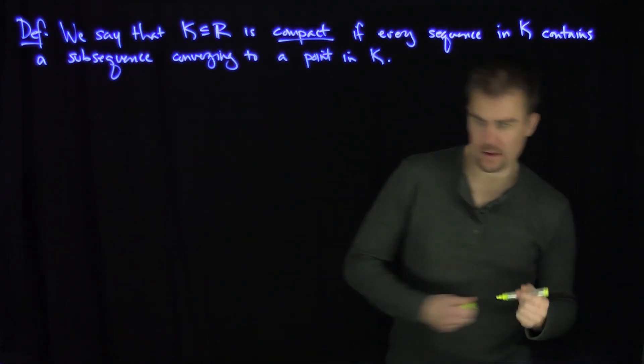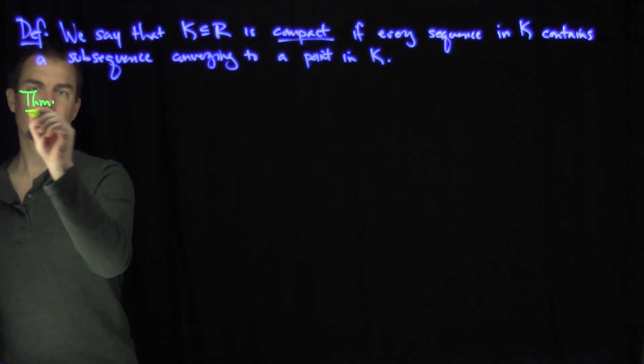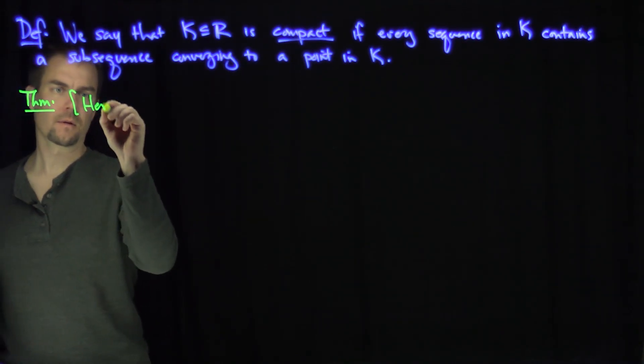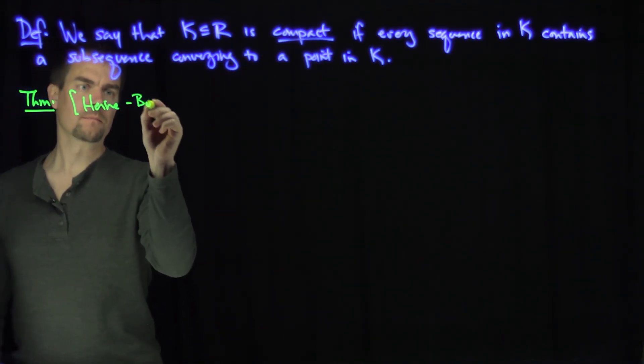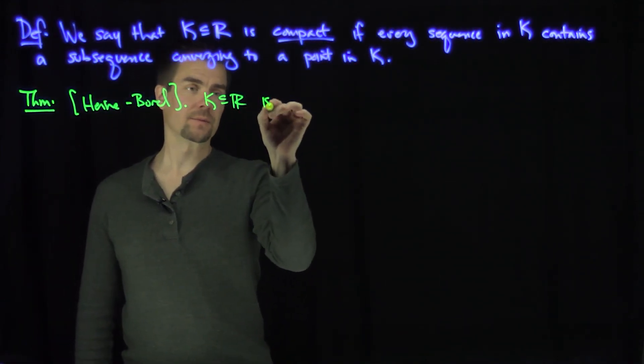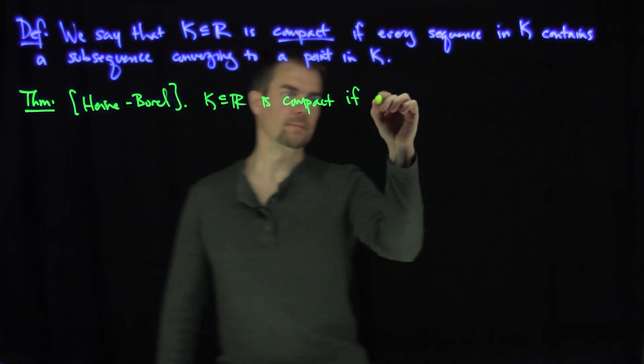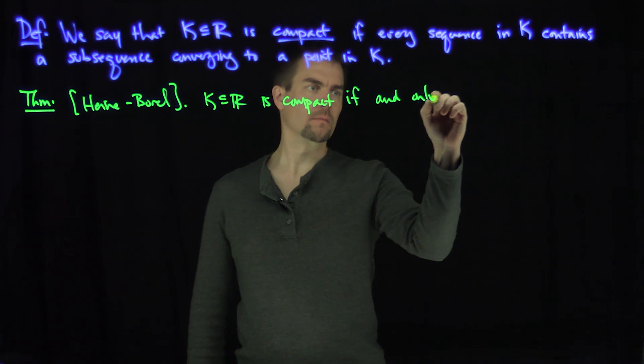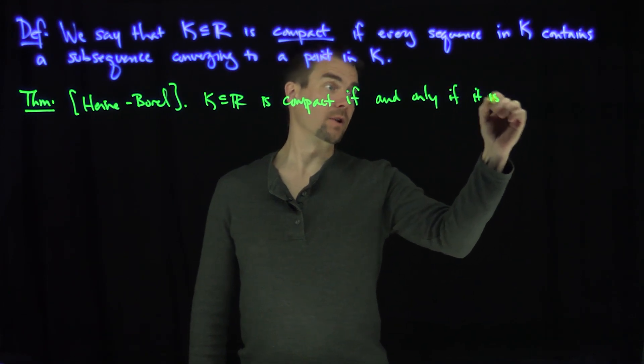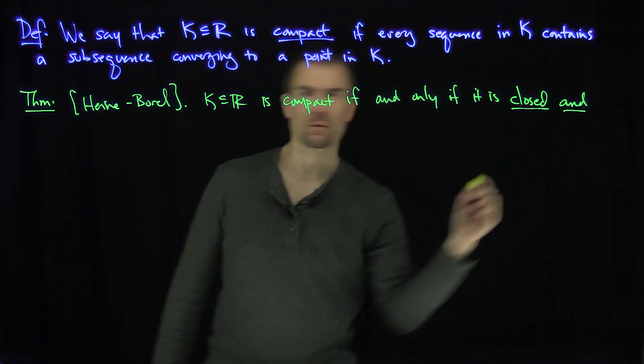And so our main goal now is we're going to state the Heine-Borel theorem. It says that k, a subset of r, is compact if and only if it is closed and bounded.